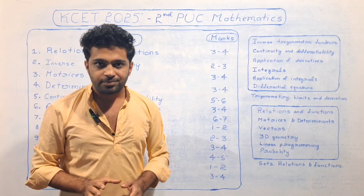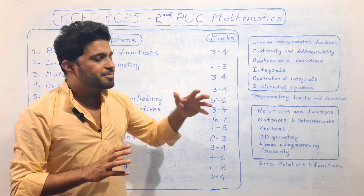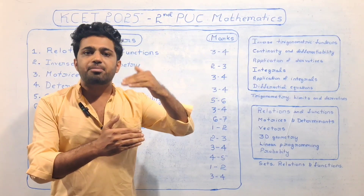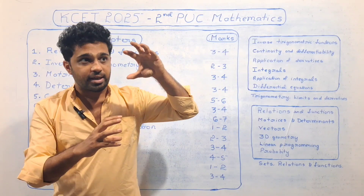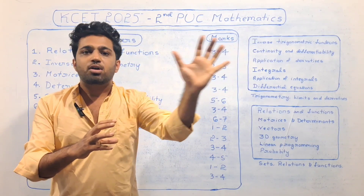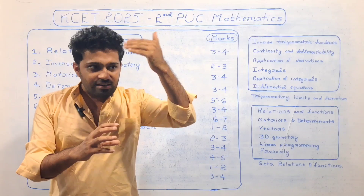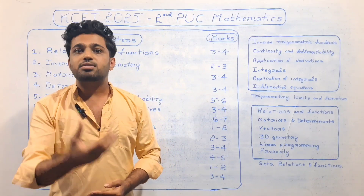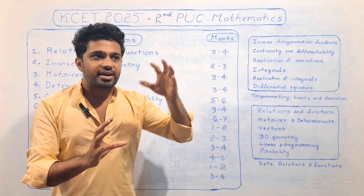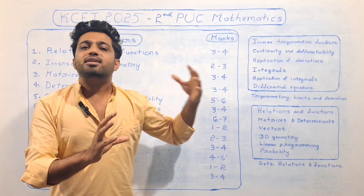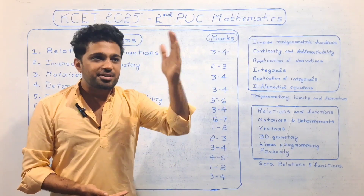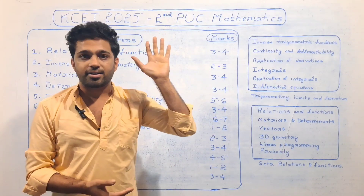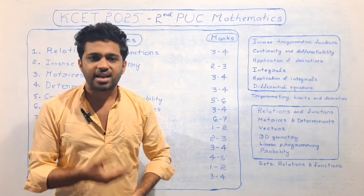Basically, you need to practice these chapters with understanding and link them together. There are 2 interlinked chapters. If you cover one chapter first, then you need to prepare the next chapter. You need to solve problems — if you get clear on one chapter, then you need to be clear on all related chapters.